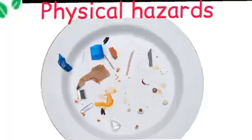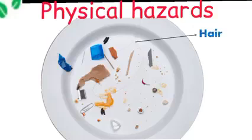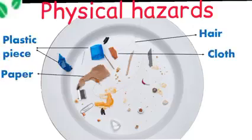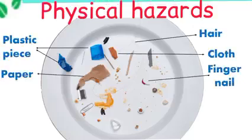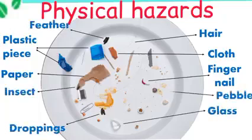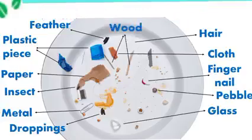Hair, a piece of plastic, paper, cloth, fingernails and other similar items fall into the low range category. High risks are those that could result in severe injury. To name a few: pest droppings, insects and their body parts, glass, stones or pebbles, metallic and wooden pieces, and so on.